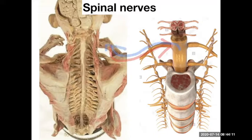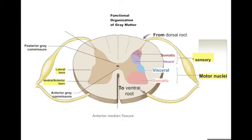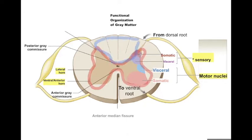First, we're going to recap on the organization of the spinal cord. The big picture is that there's a butterfly-shaped region of gray matter where the cell bodies of neurons are located, surrounded by white matter — myelinated axons going up and down the spinal cord in those ascending and descending tracts.